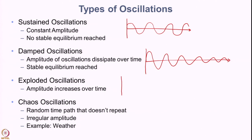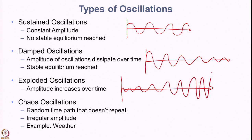When it comes to exploded oscillations, you can imagine a system that is quite unstable — we start with small amplitudes and the amplitude just keeps growing bigger and bigger over time. Such systems are said to have exploded oscillations as amplitude increases over time, and in many cases this growth in amplitude could be exponential in nature.